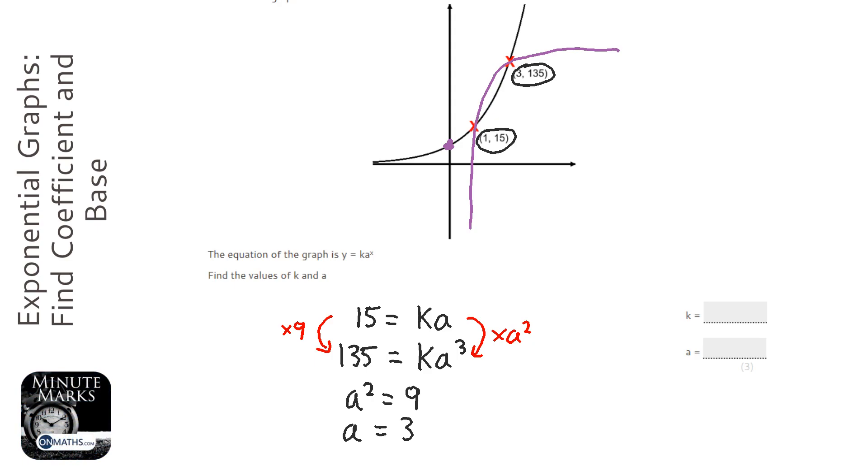I then use that a into the first equation. So 15 equals k times a. Well, that's going to be 3k. And then divide both sides by 3, and you get k equals 5. So k equals 5 and a equals 3.